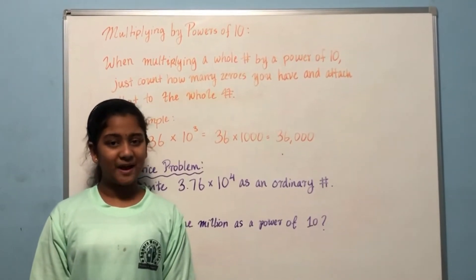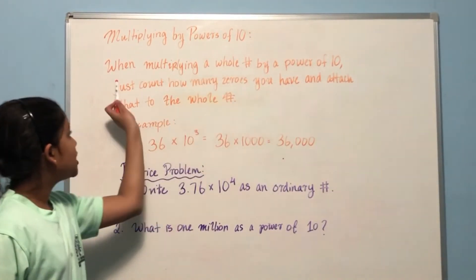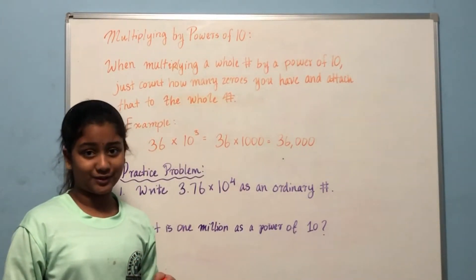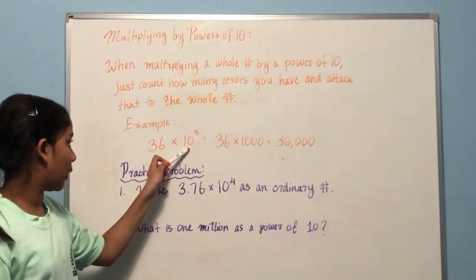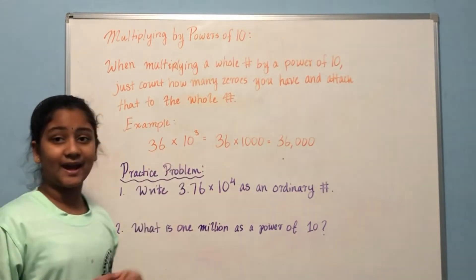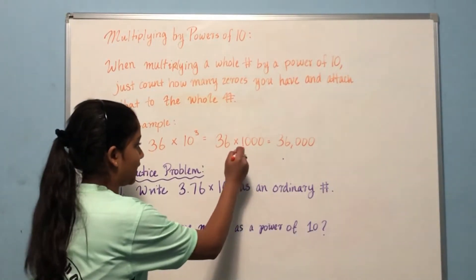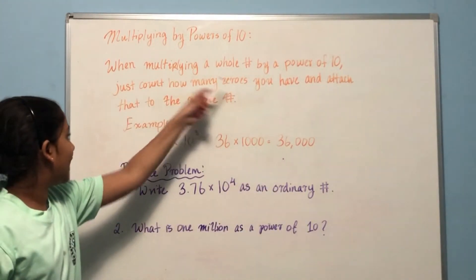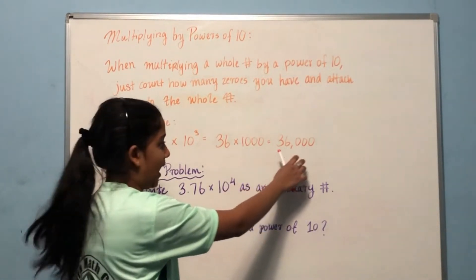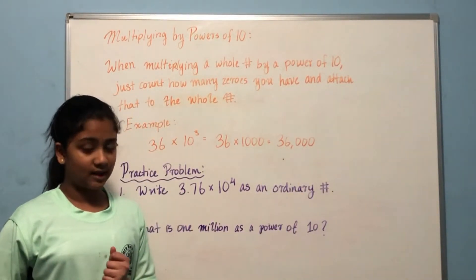Now let's move on to multiplying by a power of ten. When multiplying a whole number by a power of ten, just count how many zeros you have and attach that to the whole number. Let's look at this example: thirty-six times ten to the power of three. The power of three indicates we have to add three zeros. We attach those three zeros to 36, which gives us a product of 36,000. That's how you solve it.